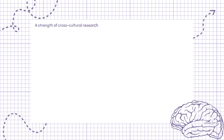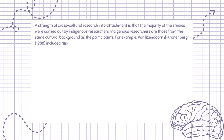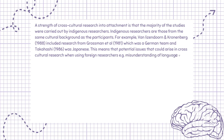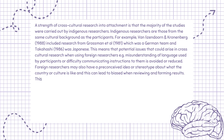A strength of cross-cultural research into attachment is that the majority of the studies were carried out by indigenous researchers — those from the same cultural background as the participants. For example, Van IJzendoorn and Kroonenberg (1988) included research from Grossman et al. (1981), which was a German team, and Takahashi (1986), who was Japanese. This means that potential issues arising in cross-cultural research when using foreign researchers — such as misunderstanding of language or difficulty communicating instructions — are avoided or reduced. Foreign researchers may also have preconceived ideas or stereotypes about the country or culture, leading to biased results.